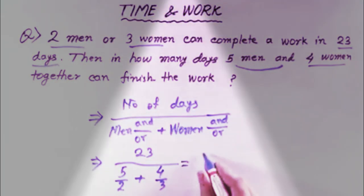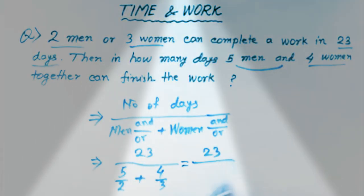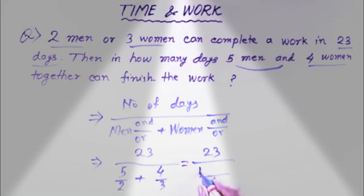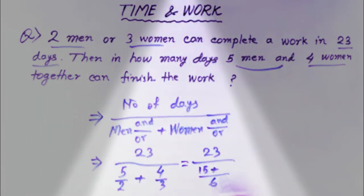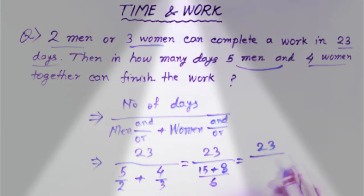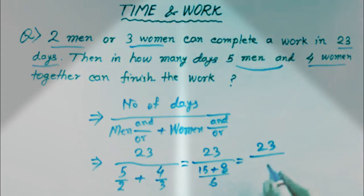Then the result will come. 23 is up, cross multiplication is down. Two threes are six. Five threes are fifteen. Four twos are eight. That will give you 23 divided by 15 plus 8, which gives you 23 divided by 23.